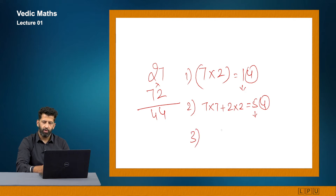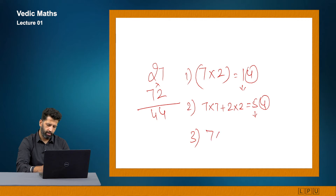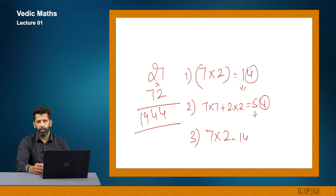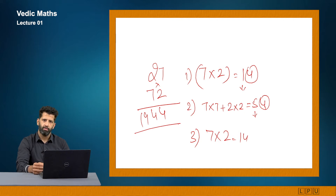In the last step for 27 × 72: multiply 7 with 2. 7 into 2 gives 14, and 14 plus 5 carry forward gives 19. So my answer is 1944. After learning this, take at least 10 sets of 2-digit numbers and try to multiply them with the cross multiplication method.